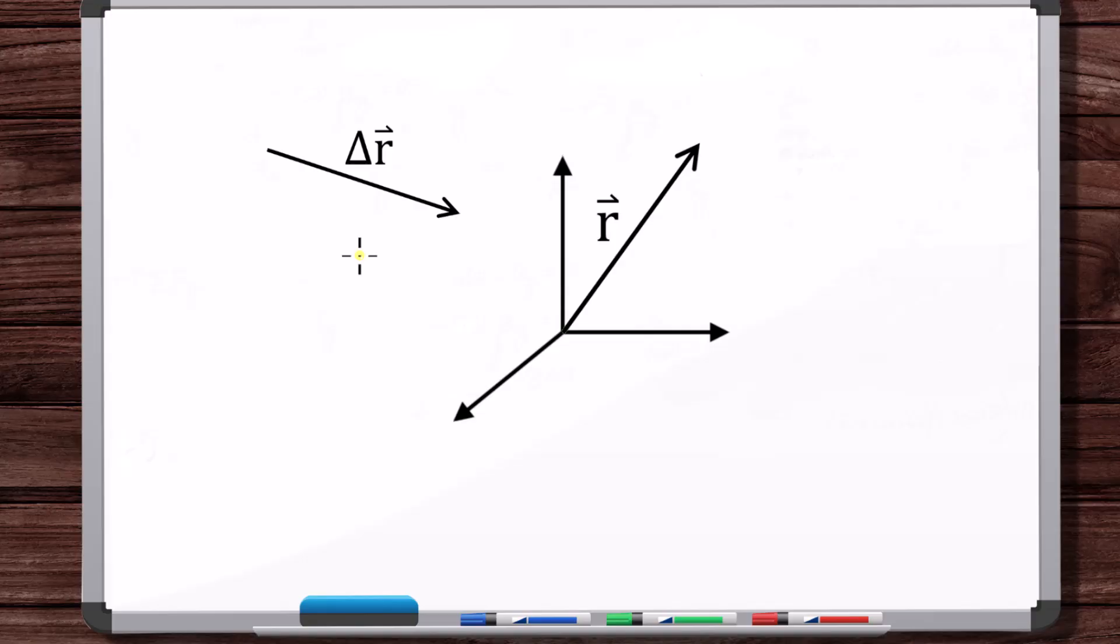The job of a position vector is to locate a point relative to the origin. Its tail has to be fixed at the origin in all cases. It cannot move.